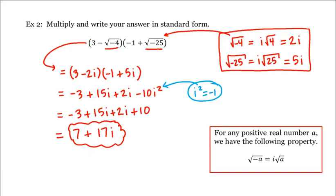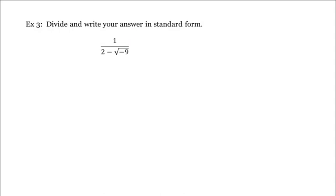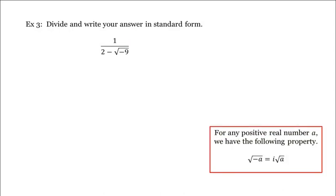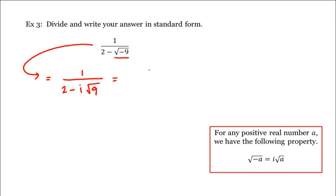Let's see one more example. Let's divide and write our answer in standard form. Again, we'll use this property on the square root of negative 9. That is, this is equal to 1 divided by 2 minus i times the square root of 9, which is equal to 1 divided by 2 minus 3i.